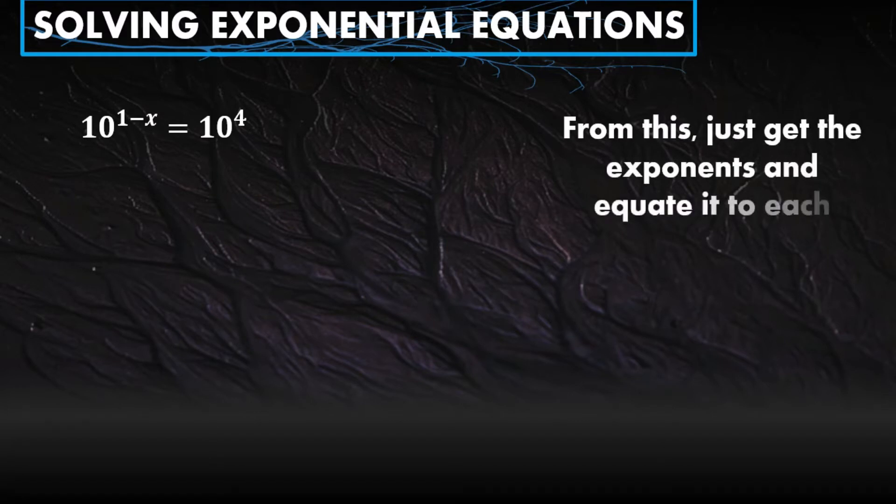For example, solve for the equation 10 raised to 1-x equals 10 raised to 4. As you can see here, they have the same base. Start with the given. From this, just get the exponents and equate them to each other. You'll take the exponents 1-x and 4, then equate them like this. We got the exponents and put an equal sign between them.